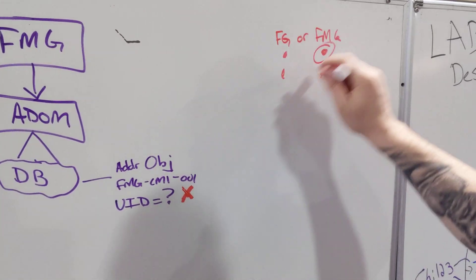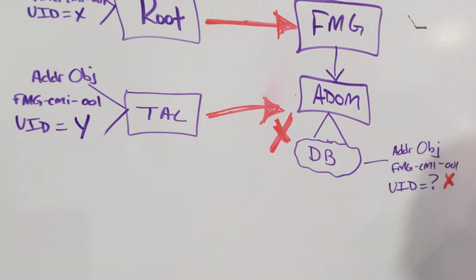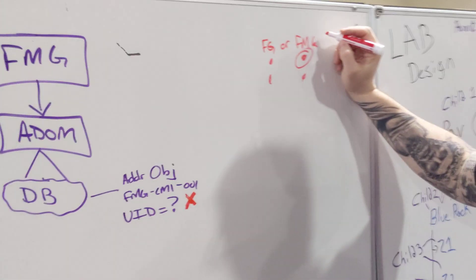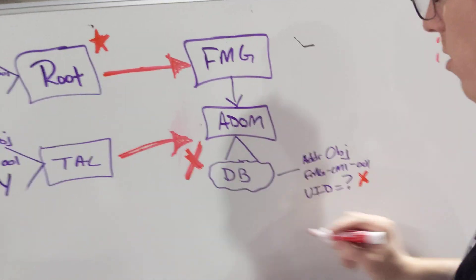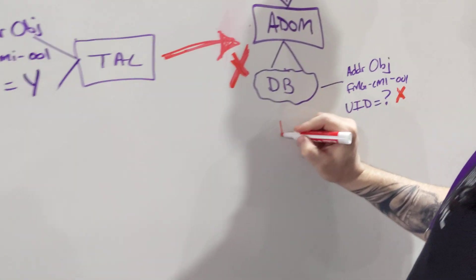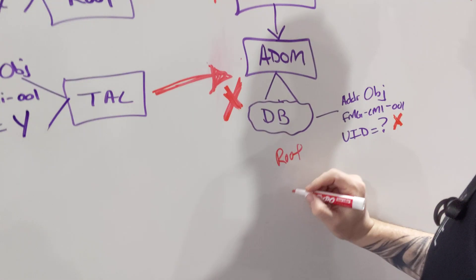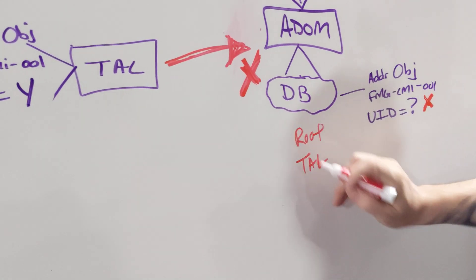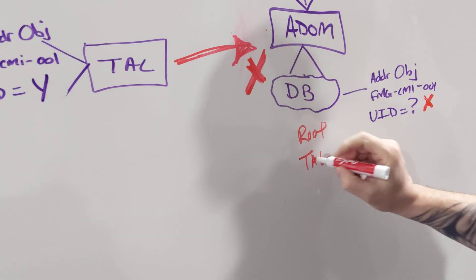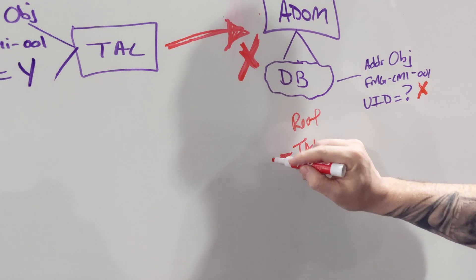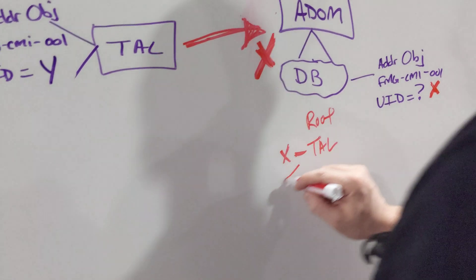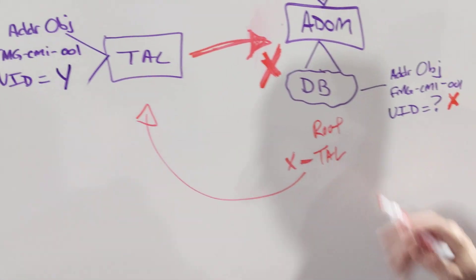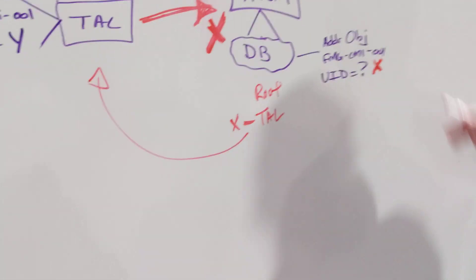Once you upload it into the database, it becomes the authoritative object. When you upload the others, it's going to flag conflicts. What you're going to say is the FortiManager is the authoritative version. Inside the ADOM database, it creates a package for each of these firewalls. It's then going to check and say: for this package, the UID value should be X, but when I check this firewall, it's actually Y — so this is out of sync and needs to be synchronized.